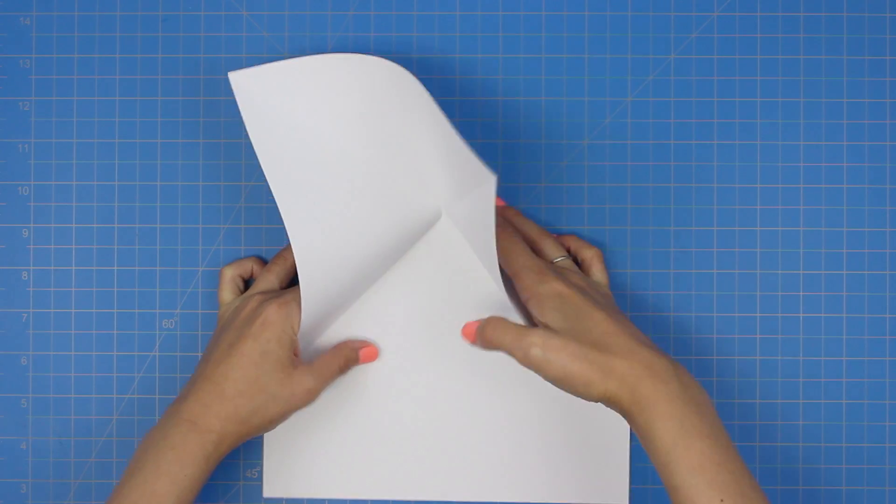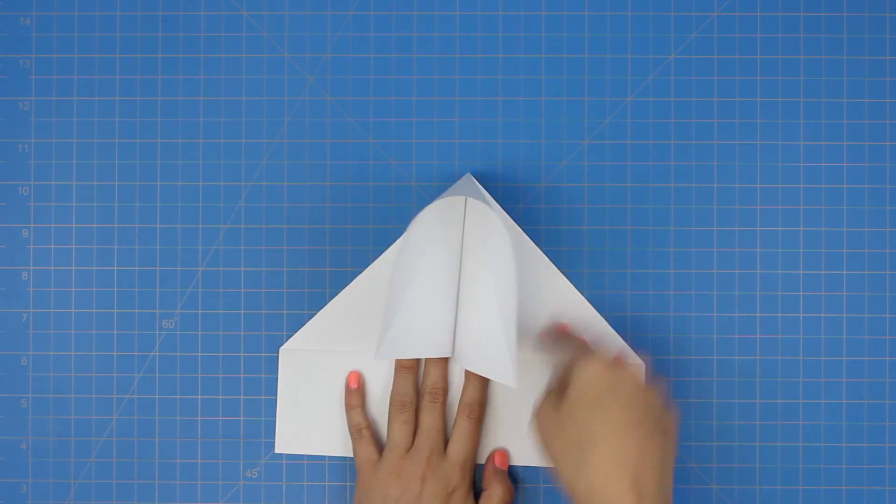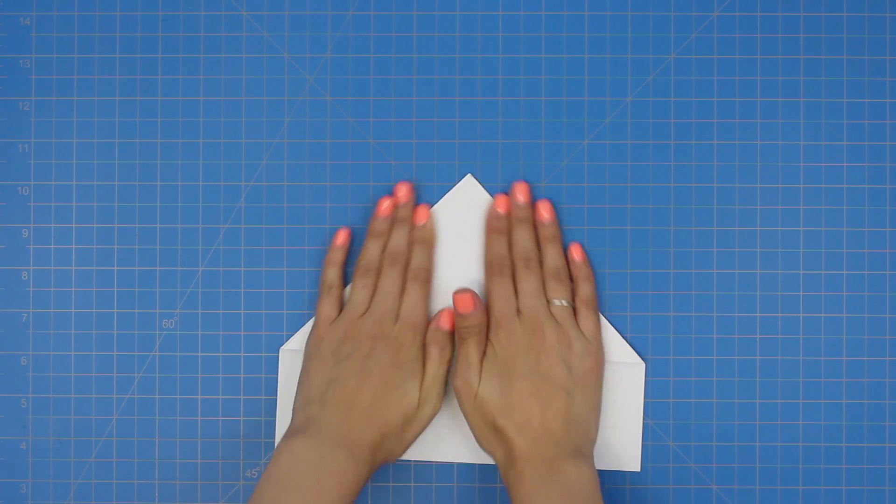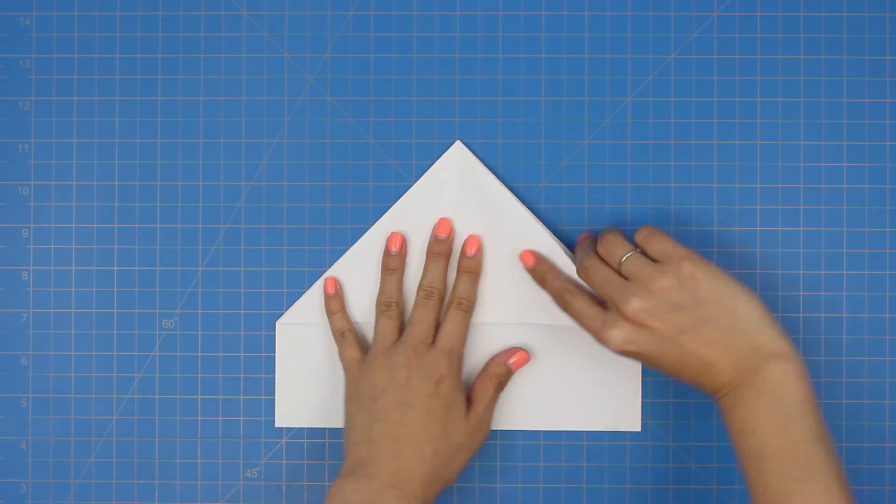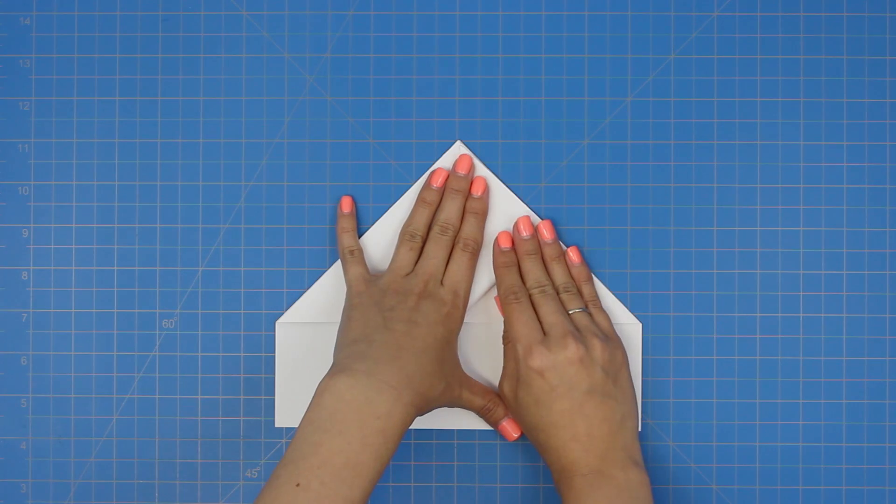Now accordion fold both sides in like this. Fold this corner up to the peak and then repeat with the other side.